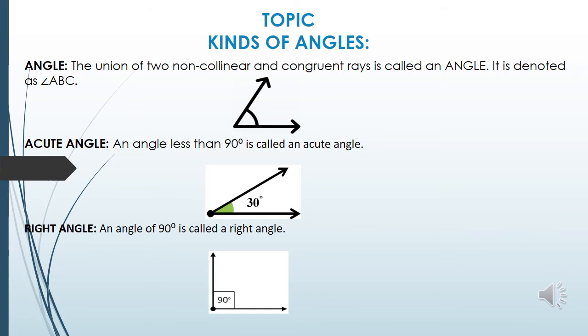Acute angle: an angle less than 90 degrees is called an acute angle. Look at the figure - 30 degrees, this is an acute angle.